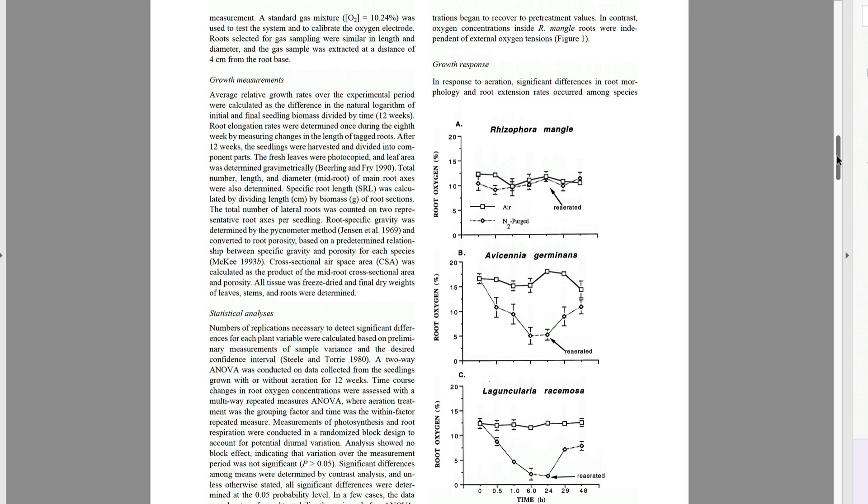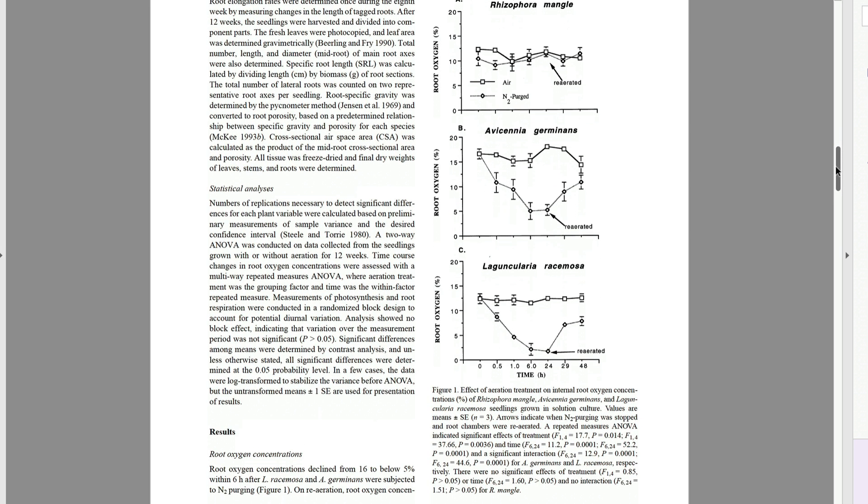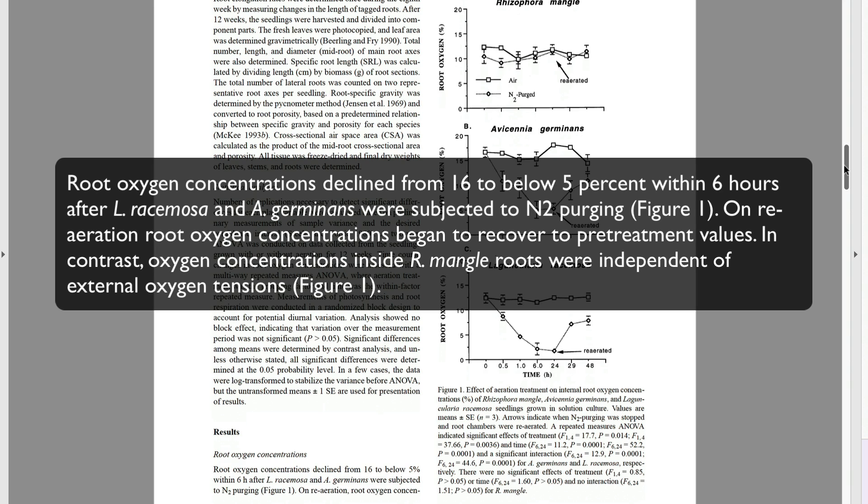In writing the narrative, I just described what pattern I saw in the data and confirmed by statistical analysis. Root oxygen concentrations declined from 16 to below 5 percent within six hours after L. Racemosa and A. Germinans were subjected to N2 purging, figure one. On re-aeration, root oxygen concentrations began to recover to pretreatment values. In contrast, oxygen concentrations inside R. Mangle roots were independent of external oxygen tensions, figure one. That's a concise description of what happened.